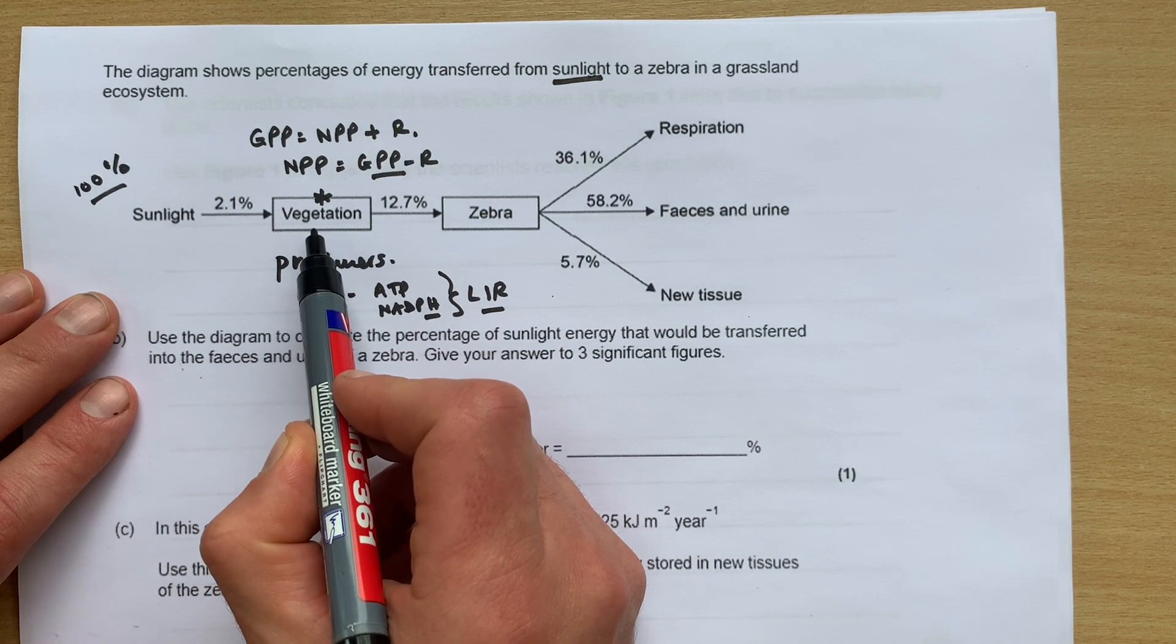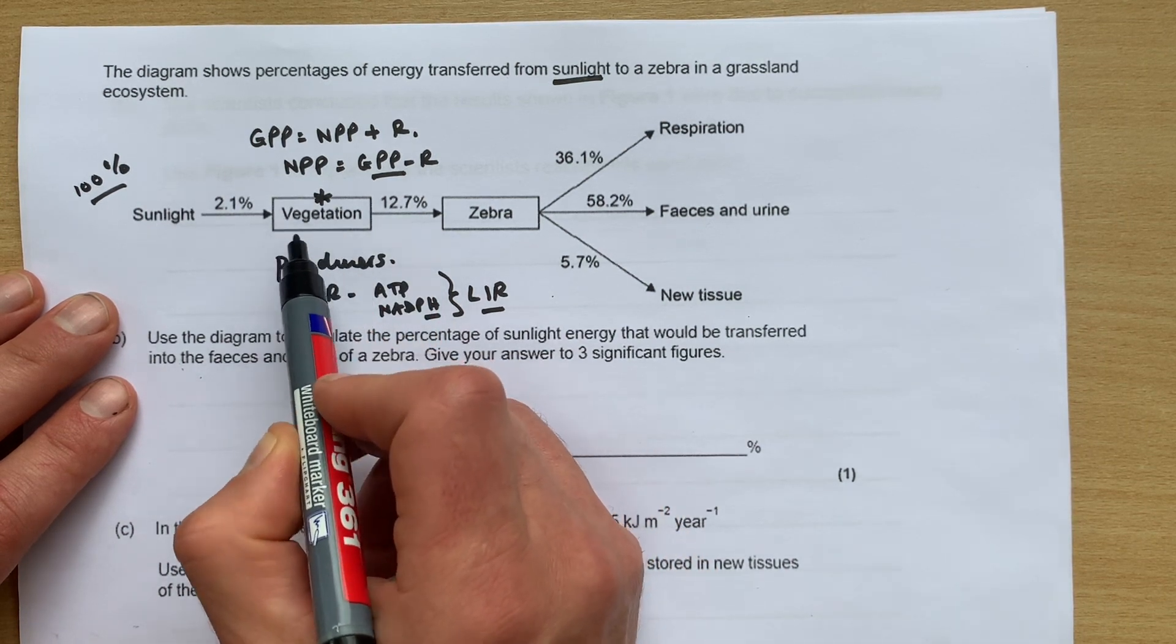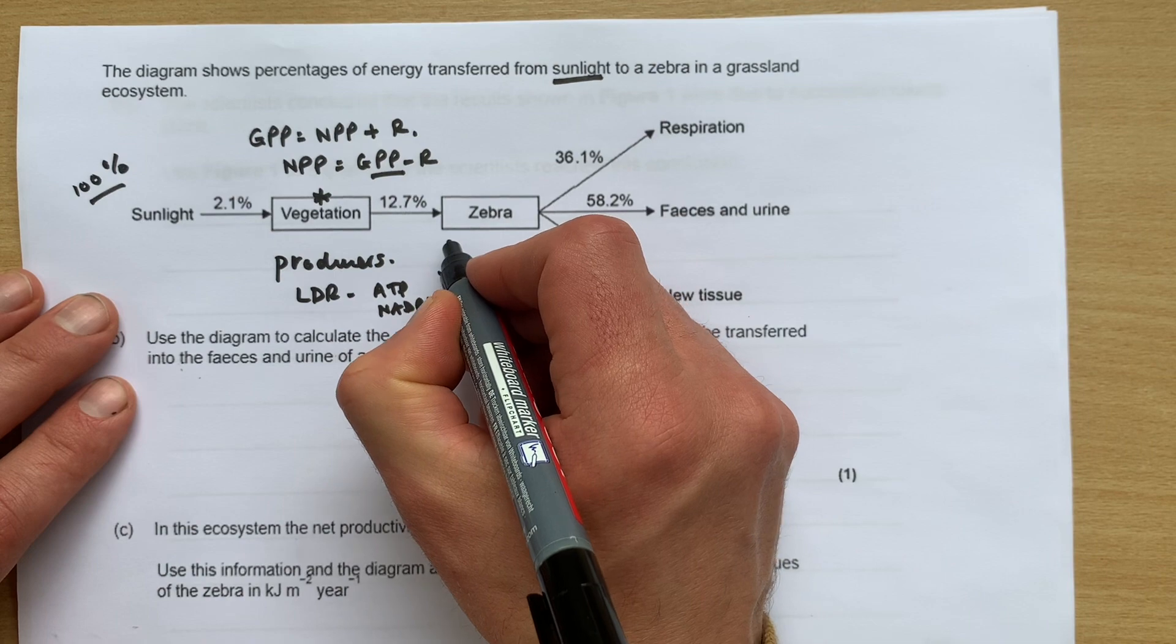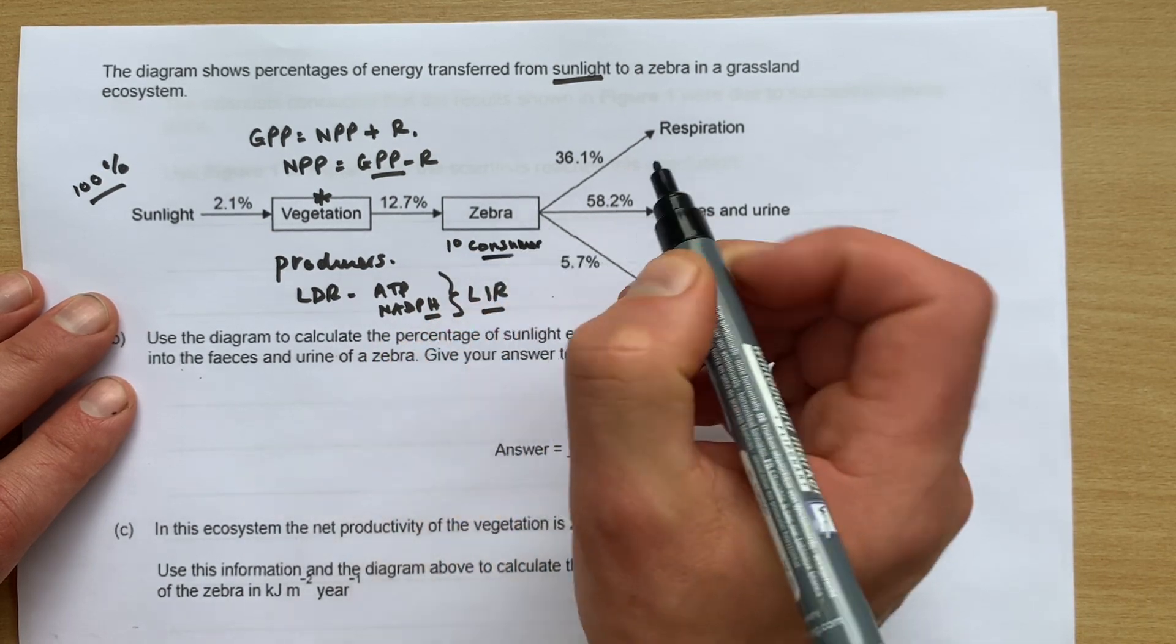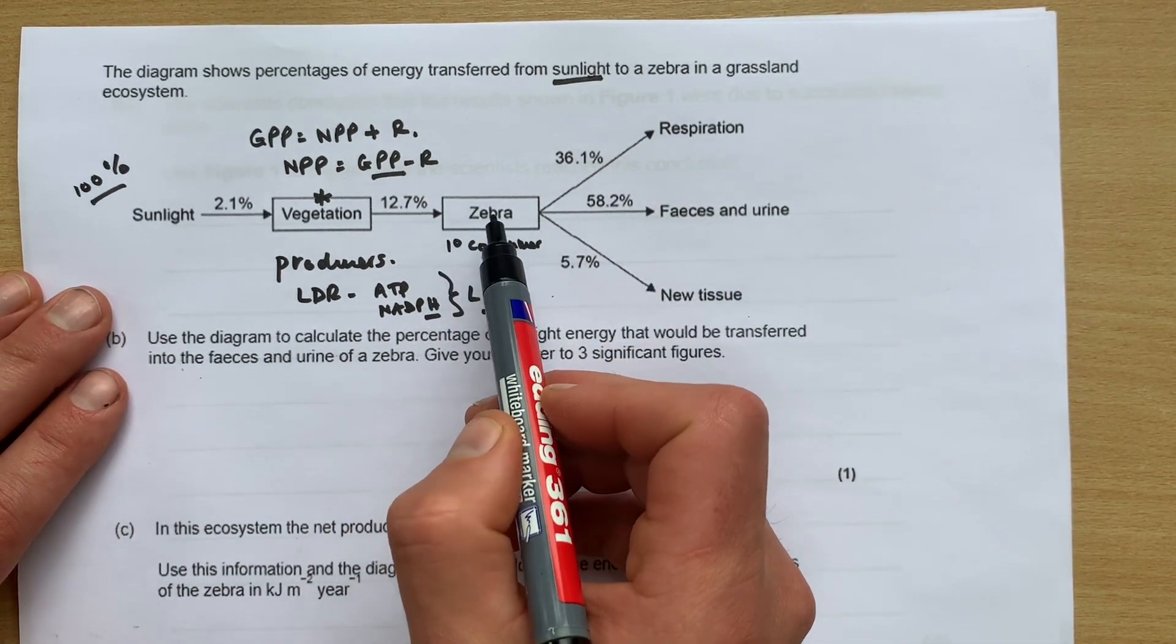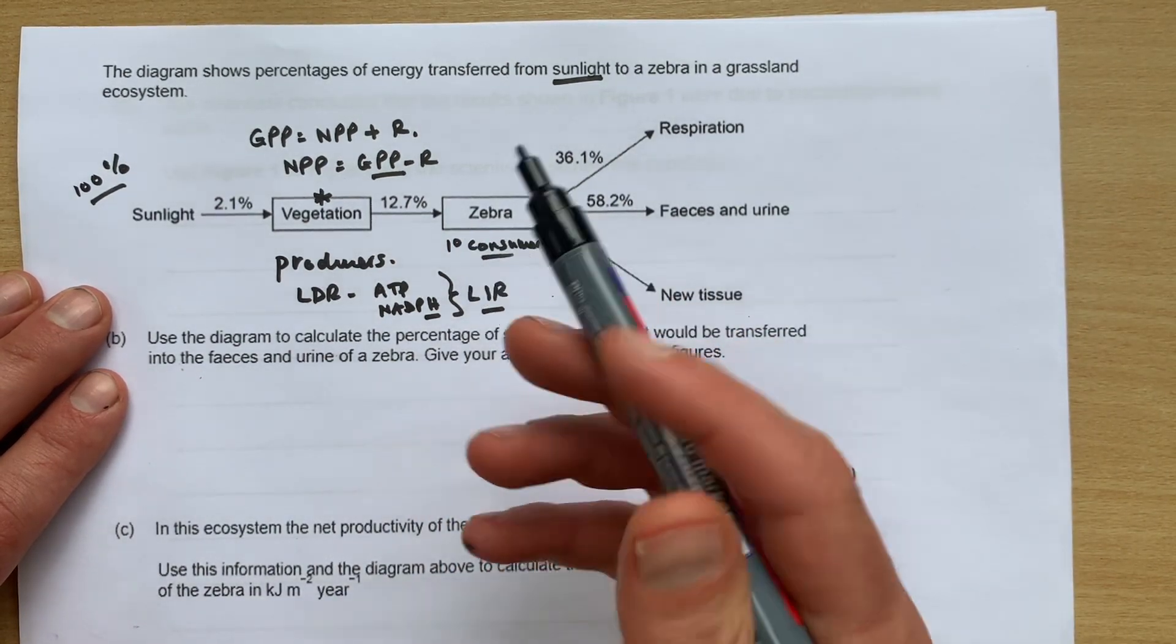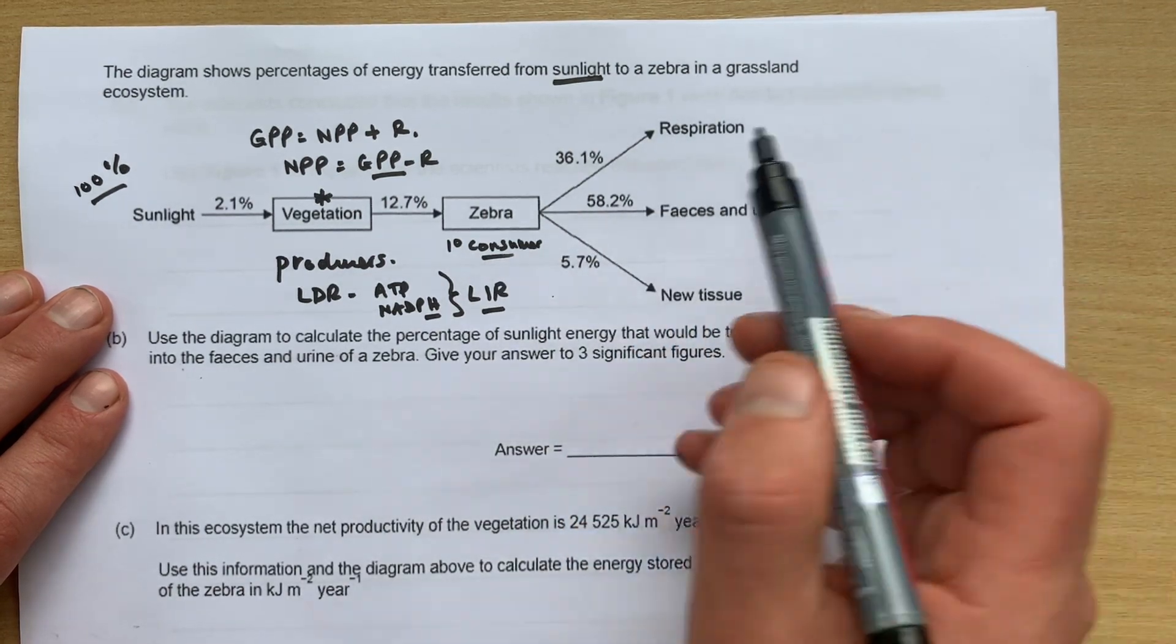Now from the vegetation, it says 12.7 percent of the energy within the biomass of the vegetation is then going to be transferred into the zebra, which is the primary consumer. Now of the energy that's being consumed by the zebra, we know they're holozoic feeders, so they've got an internal digestive system and they hydrolyze the molecules like cellulose internally.